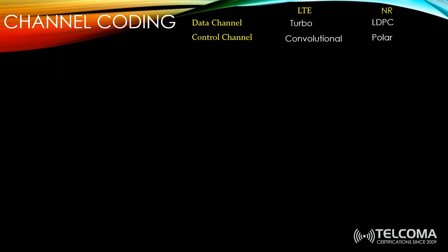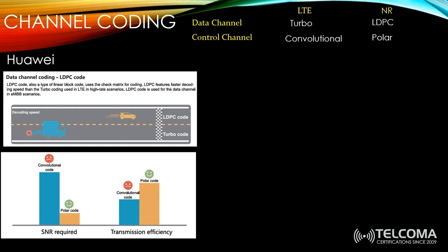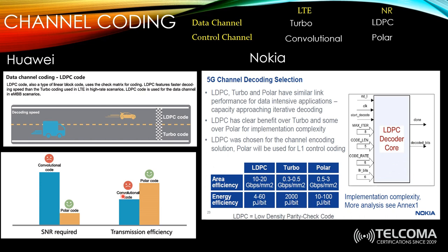LDPC coding in the data channel gives faster speed, while polar coding gives a more robust signal. LDPC provides higher efficiency and higher decoding speed compared to turbo coding previously used in LTE. In the control channel, polar code requires a lower SNR in 5G and has much better transmission efficiency compared to convolutional codes. Nokia and other vendors confirm the same: LDPC and polar code replace turbo code, with Nokia highlighting that LDPC has a clear benefit over turbo and some benefit over polar for implementation complexity.